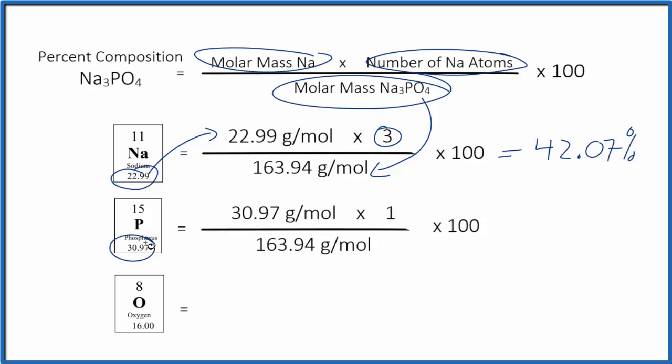We've got our molar mass for the phosphorus. We multiply it by the number of phosphorus atoms. There's only one. And then we take this whole thing here, divide it by the molar mass of the entire compound. We multiply and get 18.87%.